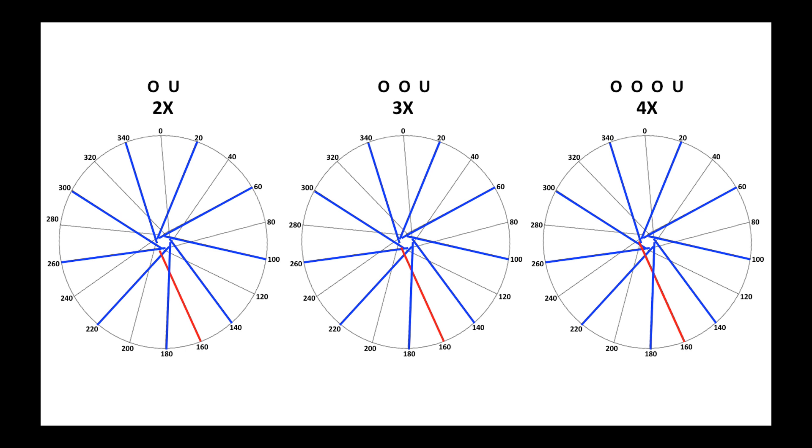There is a difference in where the red crossing spoke attaches to the hub. Here it's at about the seven o'clock position. Here about the eight o'clock position. Here about the nine o'clock position.